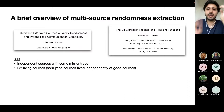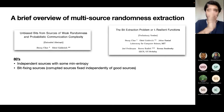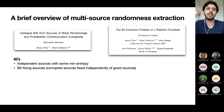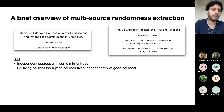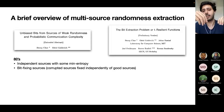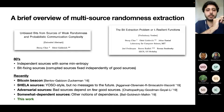Let me link this to the notion of multi-source randomness extraction, which has a very long history and cool applications throughout theoretical computer science. In a general manner, multi-source randomness extraction is the problem of extracting a random string from multiple sources of randomness that may have some structure. In the eighties, people studied independent sources with some min-entropy, or bit-fixing sources where several uniformly random bits exist but the adversary can fix a subset of bad bits without seeing the good bits.